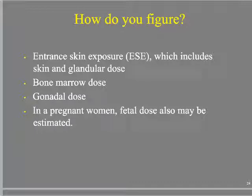Beyond the skin level: an alpha particle couldn't reach there unless internally ingested; an x-ray or gamma ray could. Then there's gonadal dose, because these are particularly sensitive parts of the body. Finally, we can estimate a fetal dose — if we have the patient's entrance skin exposure and bone marrow dose, we can calculate what the fetus received, bearing in mind that the mother basically works as a shield around the fetus.